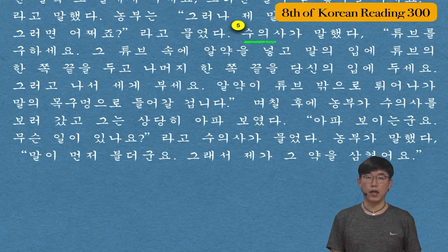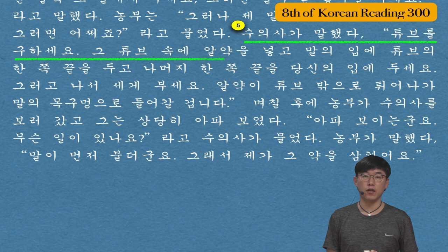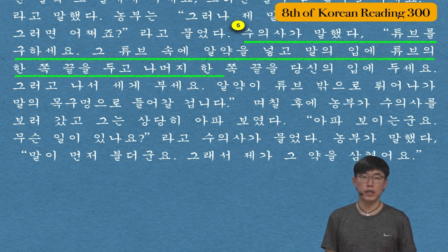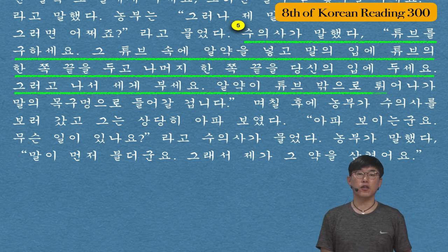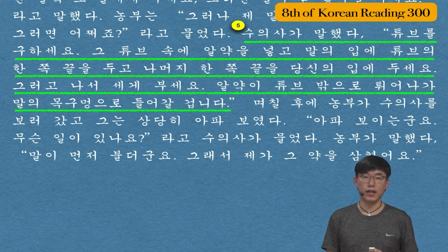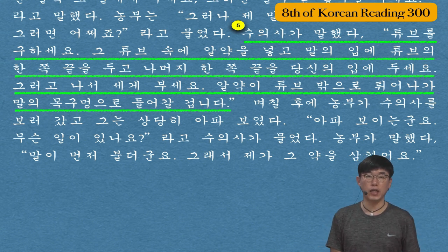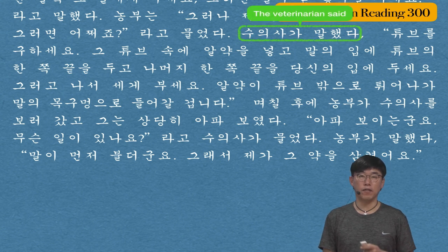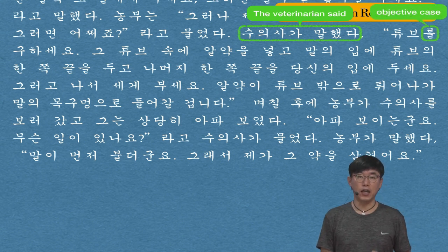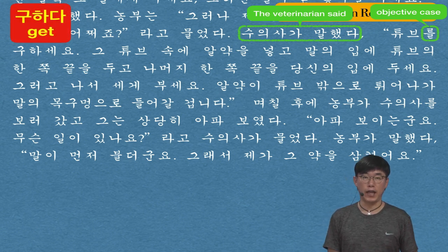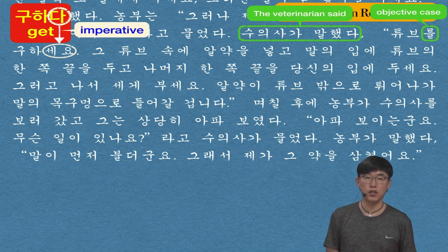The fifth sentence: 수의사가 말했다 — the veterinarian said — followed by instructions: 튜브를 구하세요 그 튜브 속에 알약을 넣고 말의 입에 튜브의 한쪽 끝을 두고 나머지 한쪽 끝을 당신의 입에 두세요 그러고 나서 세게 부세요 알약이 튜브 밖으로 튀어나가 말의 목구멍으로 들어갈 겁니다. Get a tube, put a pill into the tube, put one end of the tube in the horse's mouth and the other end in your own, then blow hard — the pill will shoot out of the tube and go down the horse's throat. 튜브 is written as it sounds, 를 is the objective case, 구하세요 from 구하다 (to get) uses 세요 for the imperative.